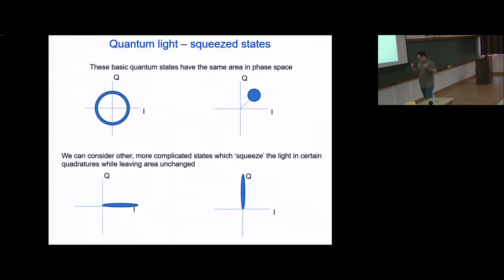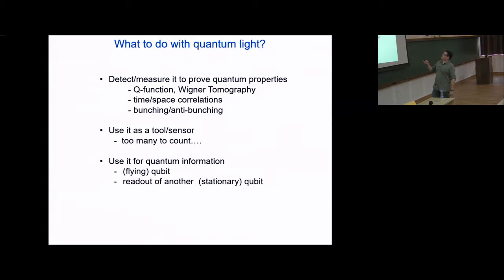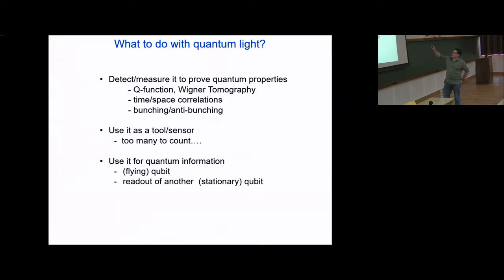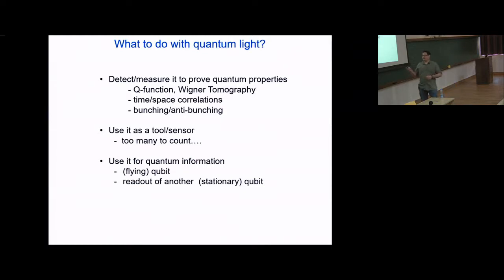If you've generated one of these states of light propagating in a transmission line, fiber, or free space aimed at a detector, the first important thing to think about is what to do with it. As an experimentalist, the basic first step is to detect and measure the light to prove it has the right quantum properties. This includes things like Q-function or Wigner tomography, time-time correlations, or bunching and anti-bunching. Practically, we also use light as a sensor for vibrations, temperature, and basically anything we can tie to the state of light.